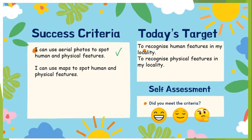Now if you remember, human features are things in the area that we have made — so it could be shops, bridges, houses, statues — things that we have made and added to our environment.